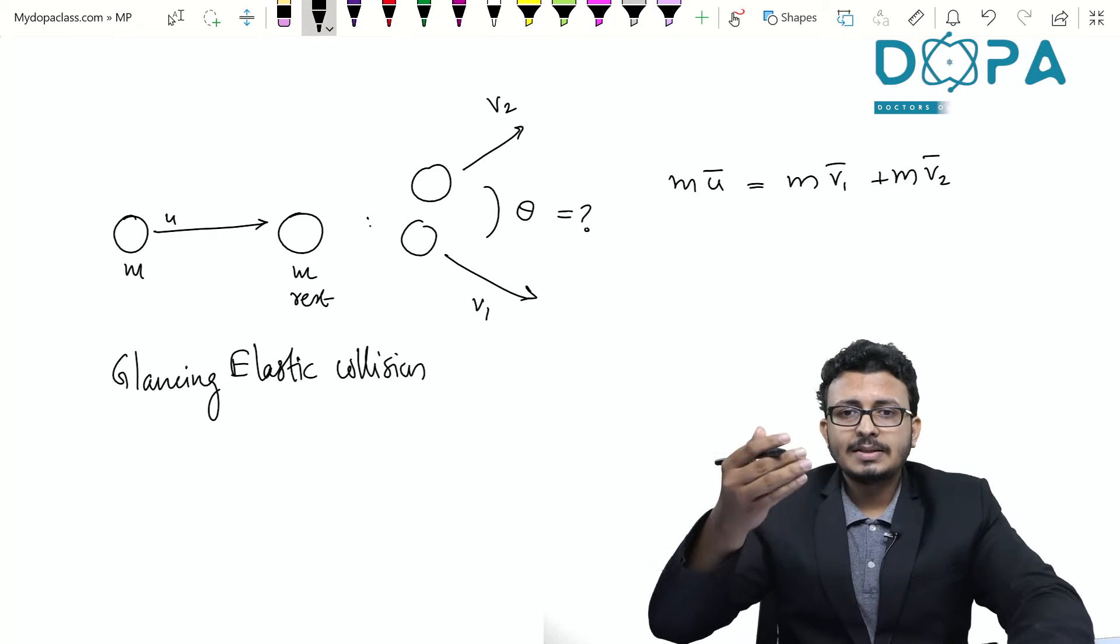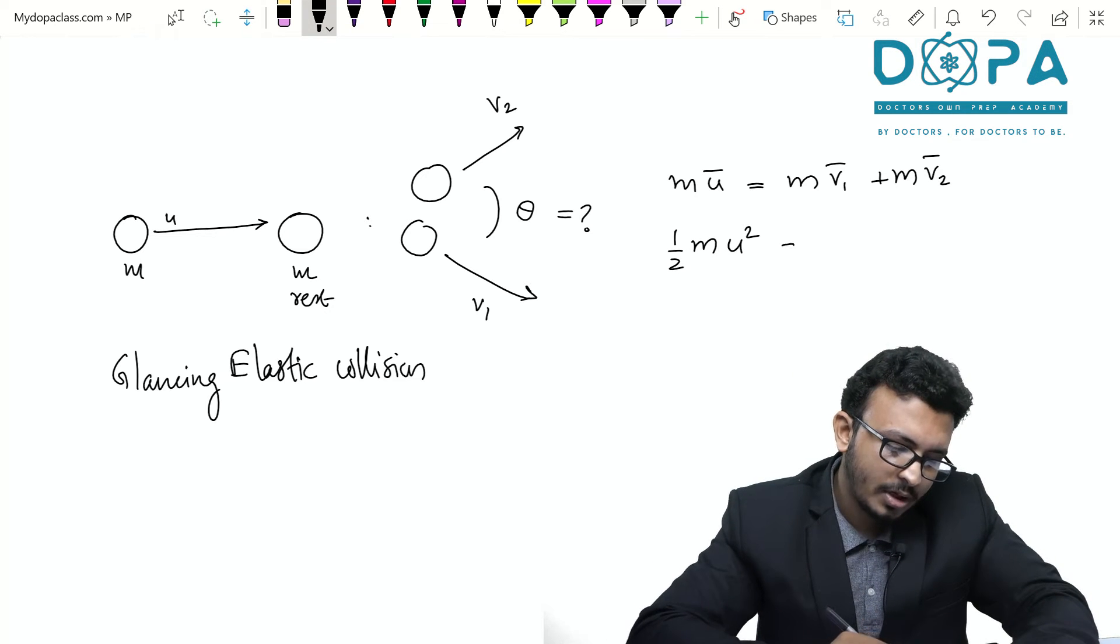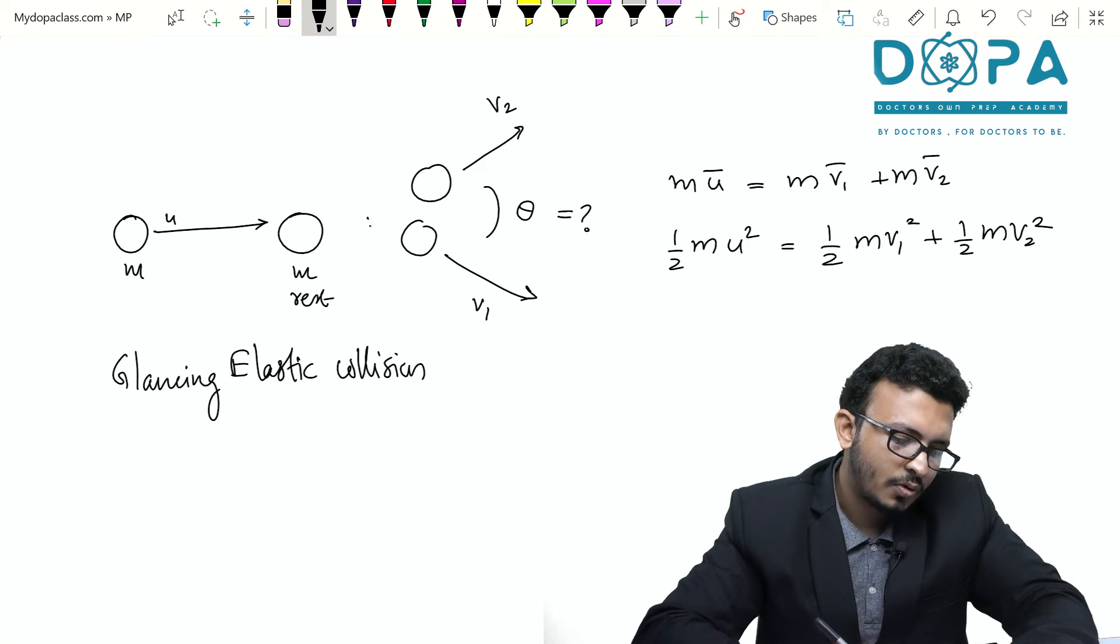Similarly, since it's an elastic collision, the kinetic energy has to be conserved. This is half MU square is equal to half MV1 square plus half MV2 square.